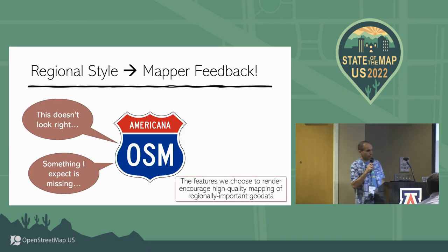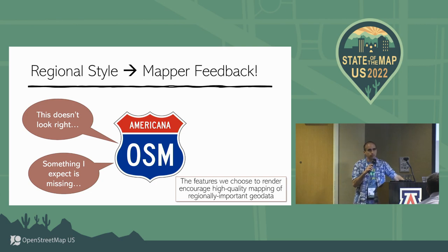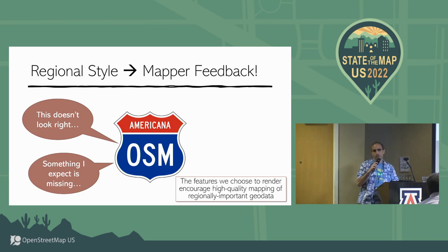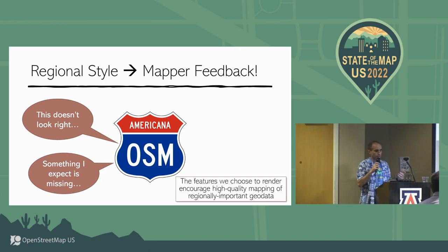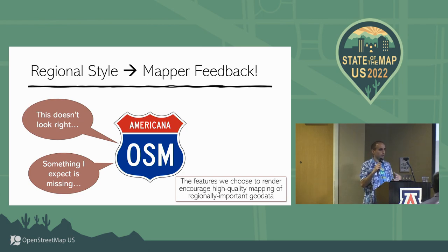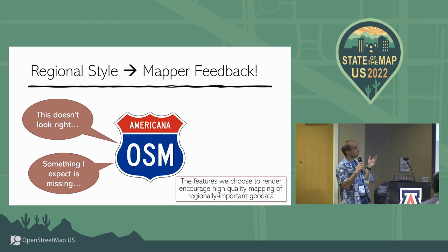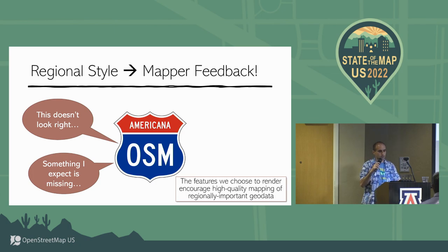Another useful purpose for a regional style is mapper feedback. When a mapper sees what we're drawing on the map and notices something doesn't look right or something's missing, that gives feedback to mappers to put certain features in the map. The features we choose to render, emphasize, or de-emphasize will help mappers put things on the map that are useful for an American style.